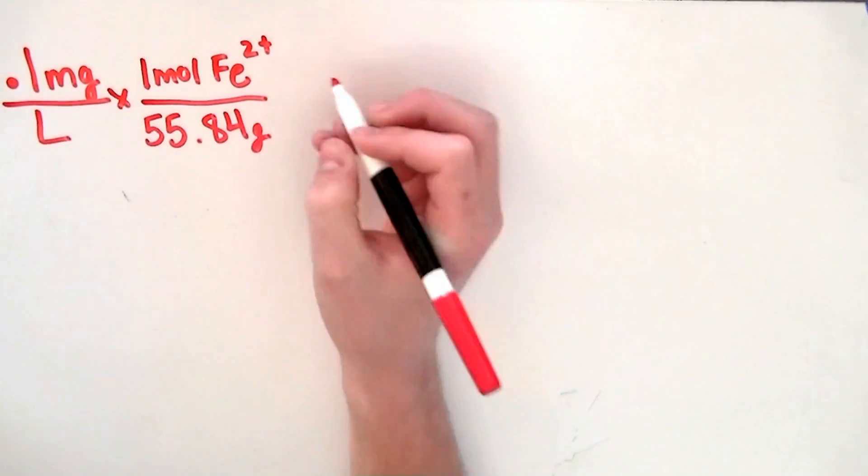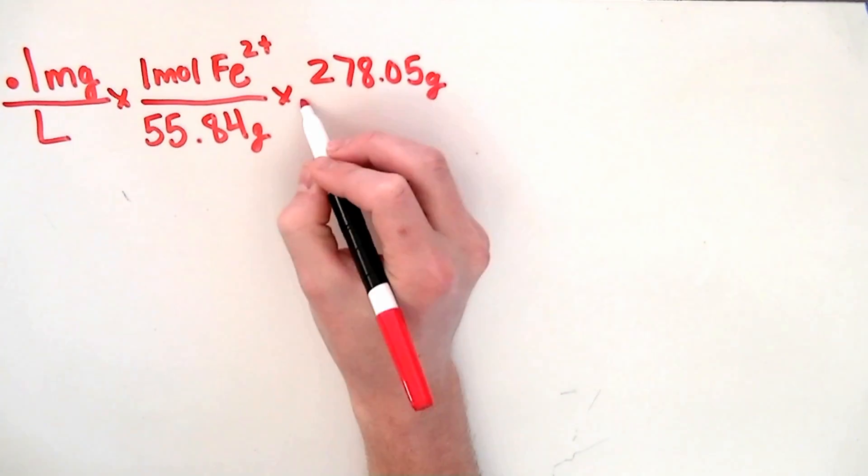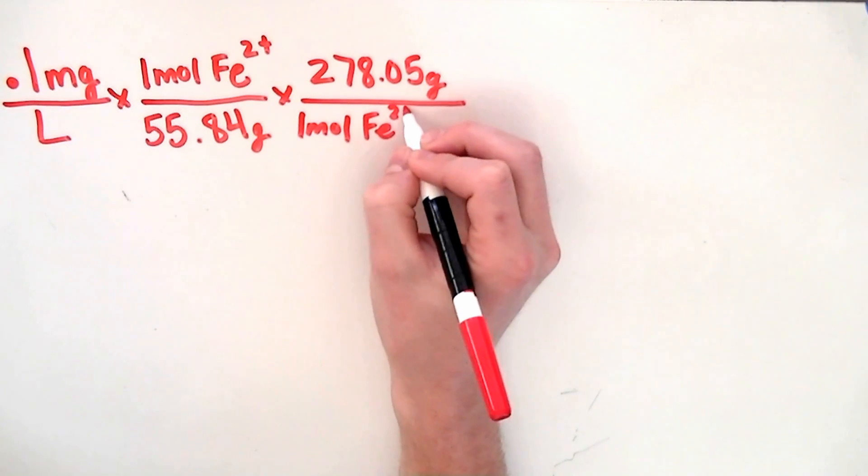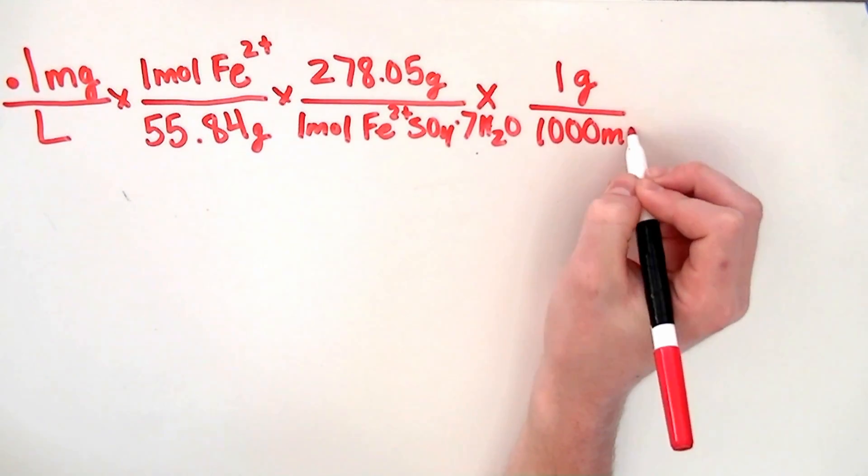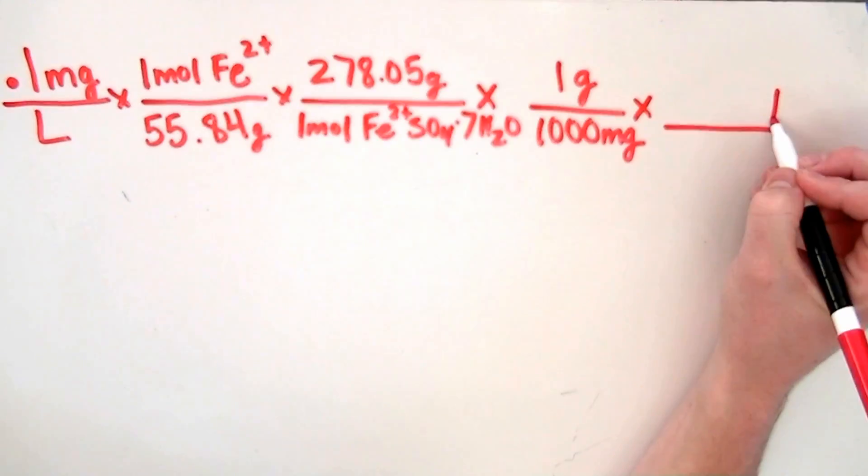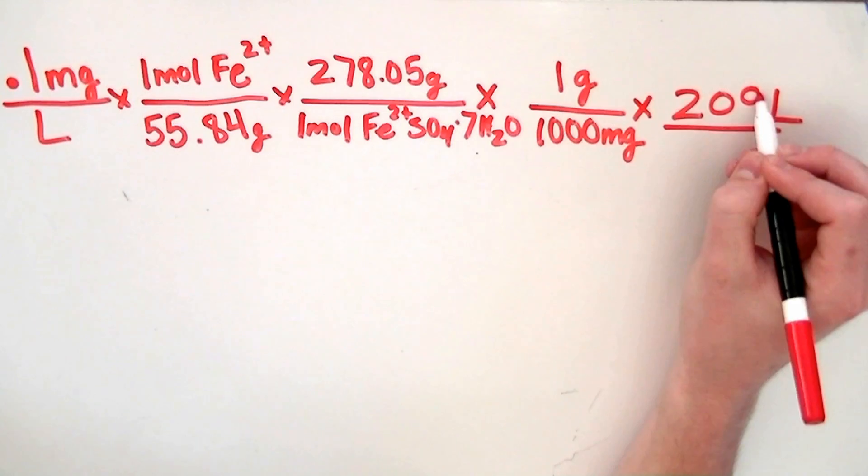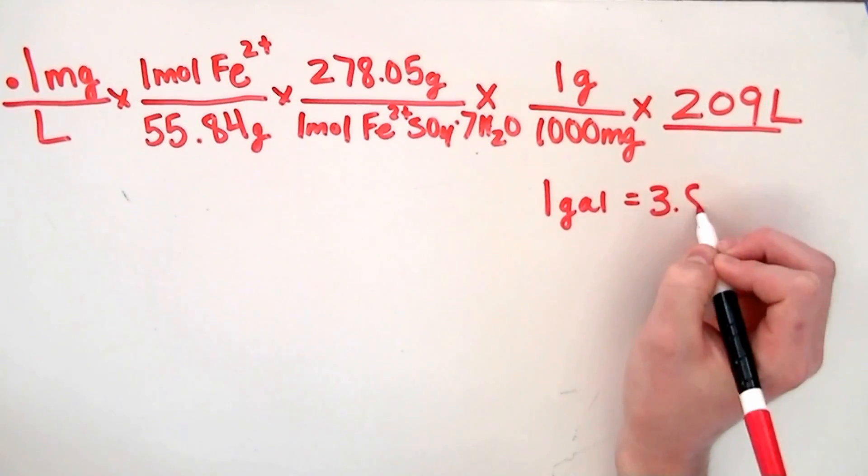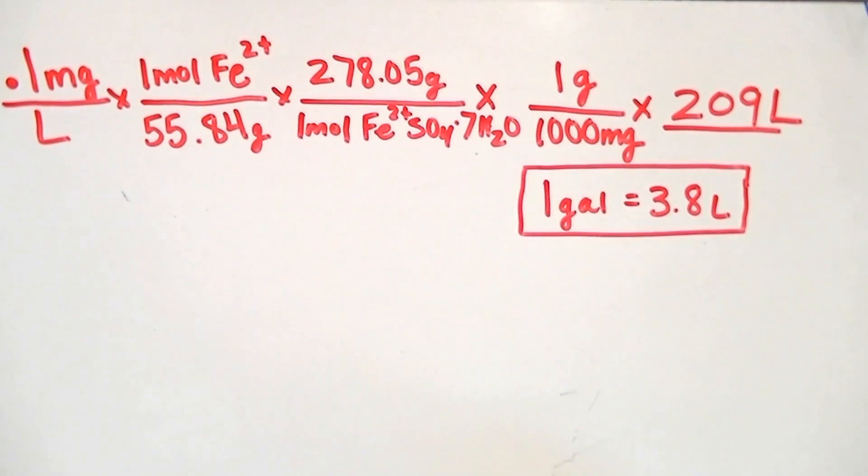We then multiply by 278.05 grams, which is the molecular weight of our fertilizer, iron 2 sulfate heptahydrate. At this point we want to get out of milligrams and into grams, so we divide by 1,000 milligrams. The last step in this calculation involves multiplying by the number of liters your aquarium is. We're using a 55-gallon aquarium, which is 209 liters. Don't forget that 1 gallon equals 3.8 liters, so you can put your own number in this spot.